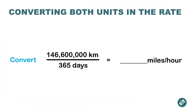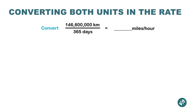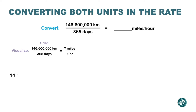For example, convert 146,600,000 kilometers over 365 days into miles per hour. I kept the first fraction exactly the same and then wrote it neatly as a fraction. What I want is miles over one hour. If you look at the two fractions, the units on the top and the units on the bottom are both different from what I was asked, so I'm changing both units of measurement in the rate.